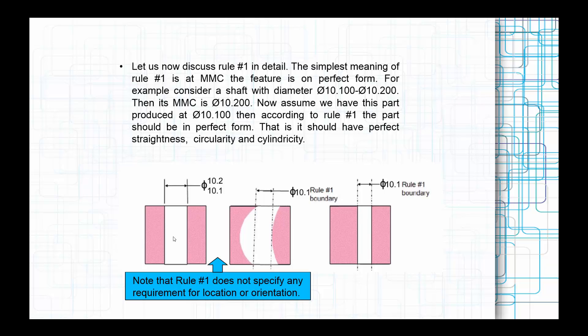Then MMC is of course the 10.2, the maximum condition. Now assume we have manufactured with all the variation 10.1. Then according to Rule Number 1, the part should be in perfect form. It should have perfect straightness, circularity, and cylindricity as well.